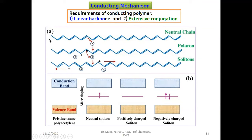If you take polyacetylene, this is the polymer of polyacetylene. In the neutral chain, it is a linear structure and has extensive conjugation, but this will not conduct electricity. In order to make it conducting, you have to create charge.